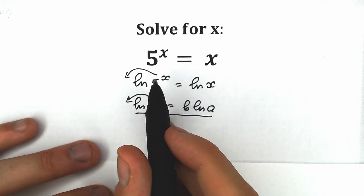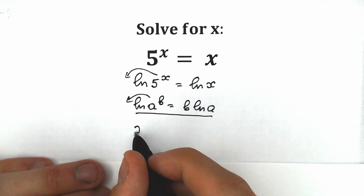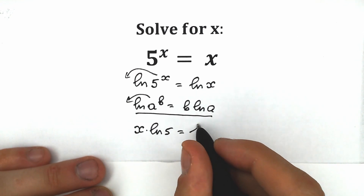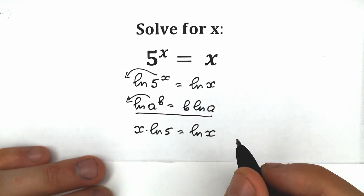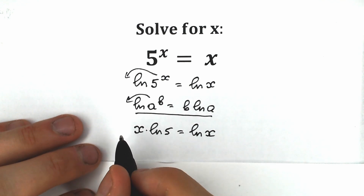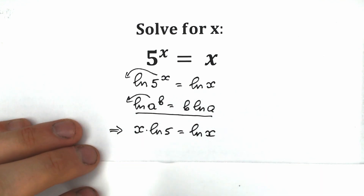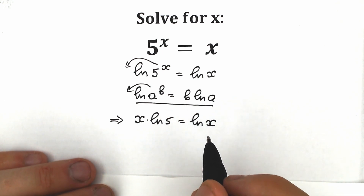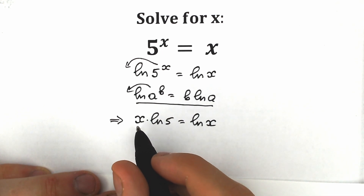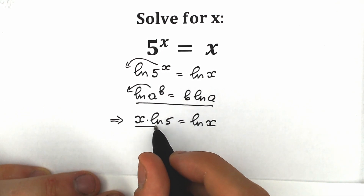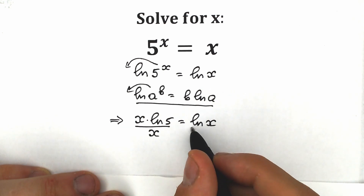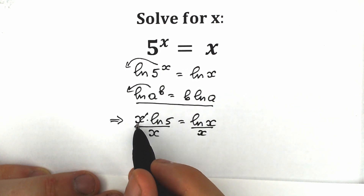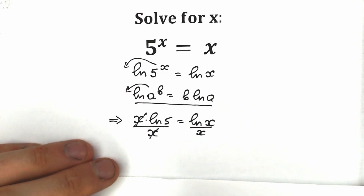So right now, what do we have? We have x times natural log 5 equal to natural log x. Let's try to group our constants on one side and variables on the other. Let's divide both sides by x — x cancels on the left side — and as a result, we have natural log 5 on the left side.